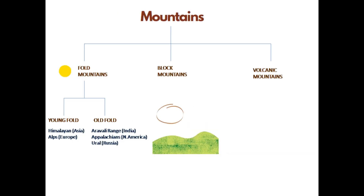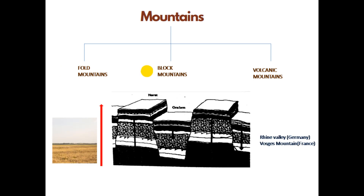There are three types of mountains: fold, block, and volcanic. Fold mountains are further divided into young fold and old fold mountains. The Himalayas and Alps are examples of young fold mountains — their relief is rugged and they have high conical peaks. The second type is old fold mountains. By their name, we can understand their structure: they are very old, having been here for several centuries. Once they were young fold mountains too, but due to the wearing and tearing process over years, their conical shapes changed to rounded structures.